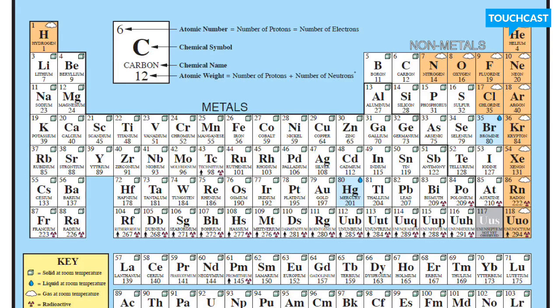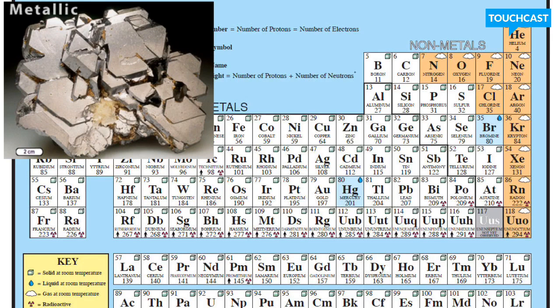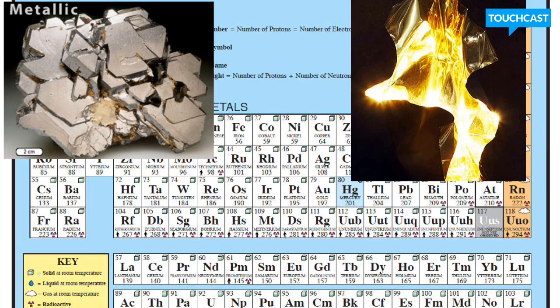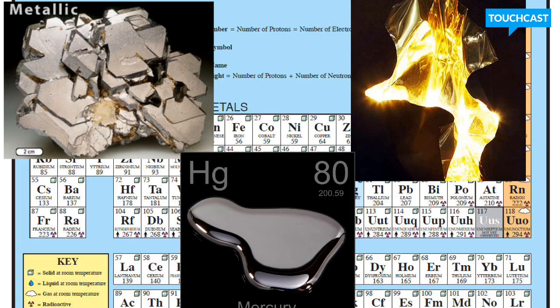The third property that makes a metal a metal is that it has luster. Luster is fancy for the word shine. So as you can tell from all of these samples of metals, metals are shiny. They have luster.